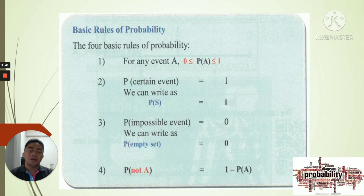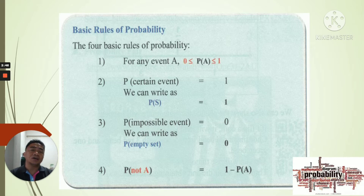And number four: the probability of not the event — or the complement — is found by subtracting from 1. So 1 minus the probability of that event gives you the probability of not the event. So those are the four basic rules that we need to follow.